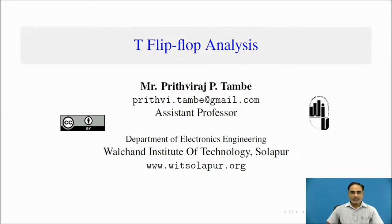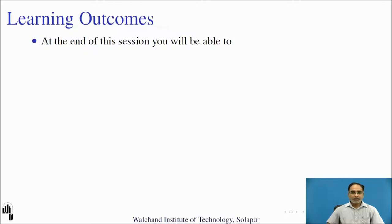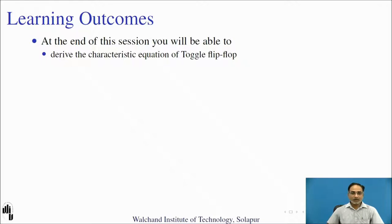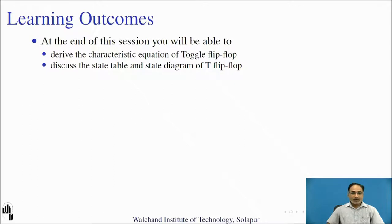Hello everyone, welcome to this session on flip-flop analysis. In today's session we are going to analyze the T flip-flop. At the end of this session you will be able to derive the characteristic equation from the characteristic table of toggle flip-flop, discuss the state table and state diagram of T flip-flop, and derive the excitation table for toggle flip-flop. This analysis will help you whenever you go into design flip-flop based applications like counter designs and finite state machine designs.